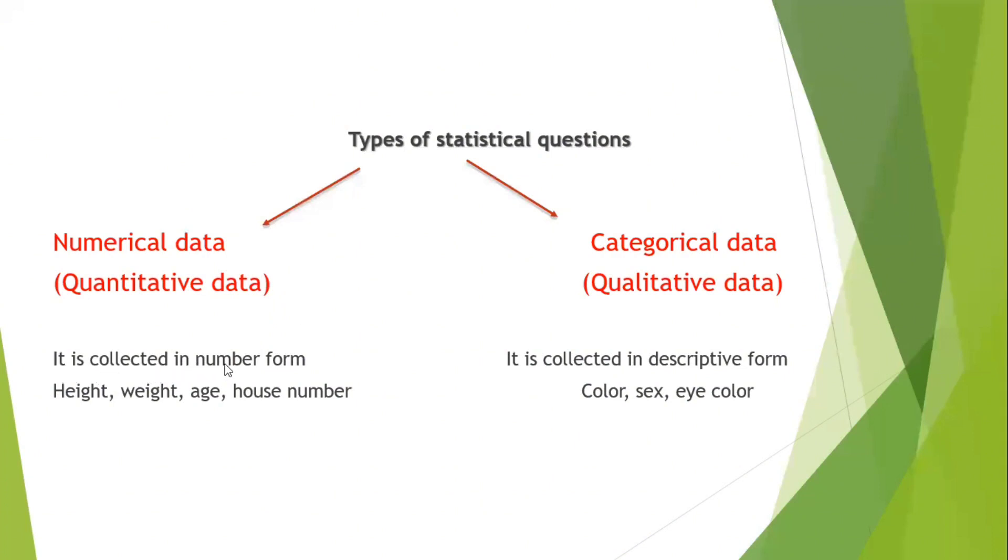It's collected in numbers. For example the height, the weight, the age, the house number. I can write all of these in numbers. But categorical like the color, the sex, the eye color. This is called categorical data.